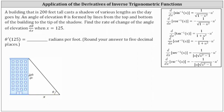So using the right triangle, we know tangent theta is equal to 200 divided by x. However, in order to find d theta dx, we need to write theta as a function of x, which means we need to solve this equation for theta by taking the inverse tangent of both sides. Inverse tangent of tangent theta simplifies to theta, giving us theta equals inverse tangent of 200 divided by x.